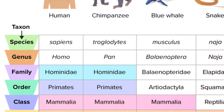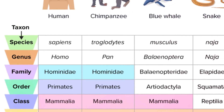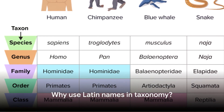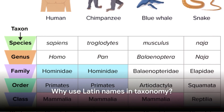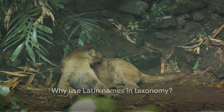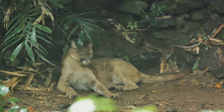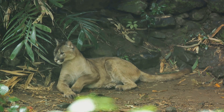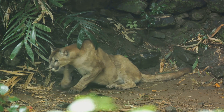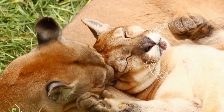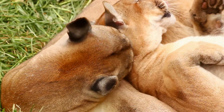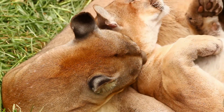Now, you might wonder why scientists don't simply use common names. Well, imagine trying to research a cougar — this one animal has over 40 common names, including mountain lion, puma, and panther. However, its scientific name, Puma concolor, remains consistent worldwide.